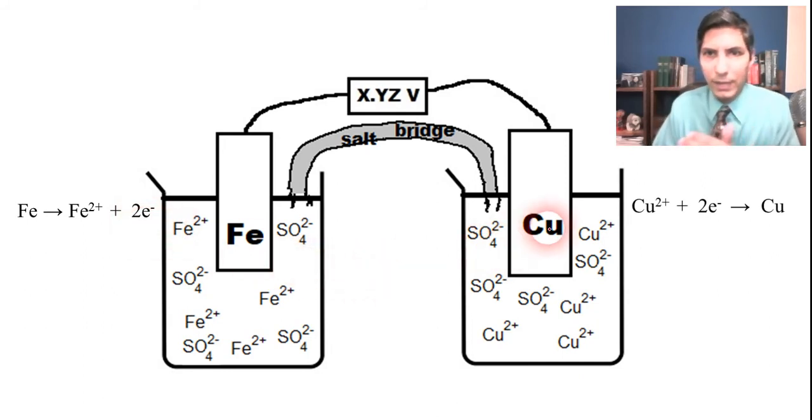On the other side of the galvanic cell, we said that the copper 2+ ions are gaining those two electrons that are being lost on this side and it's turning into copper metal. So those are the two half reactions that we just looked at in the previous example.